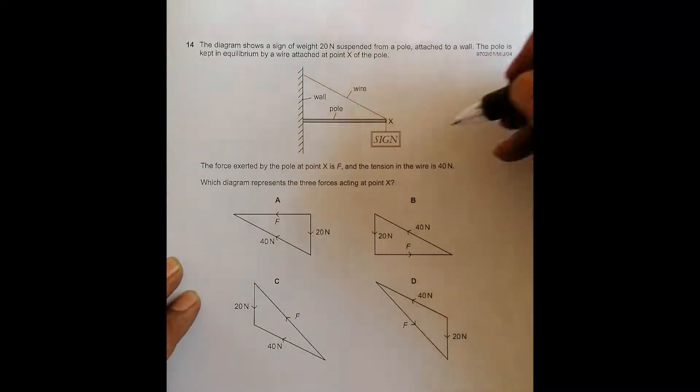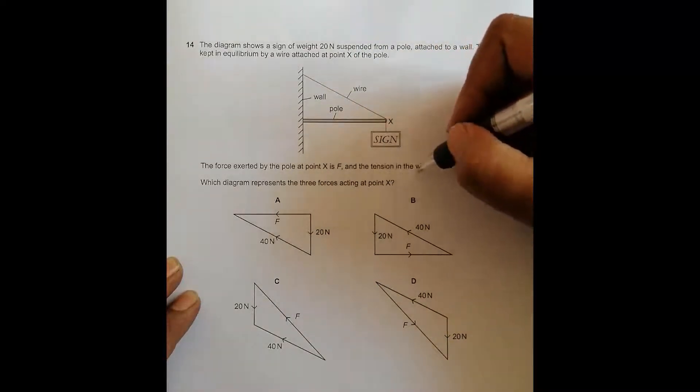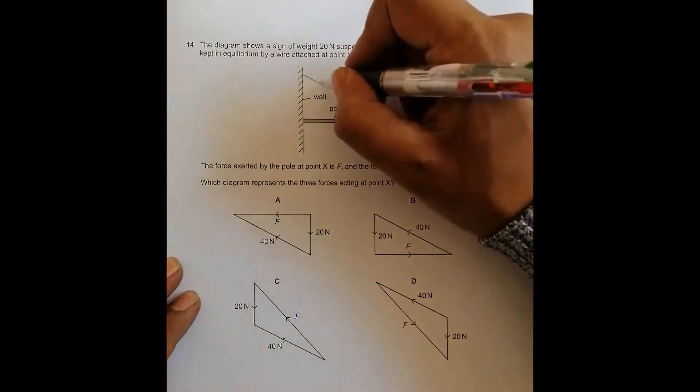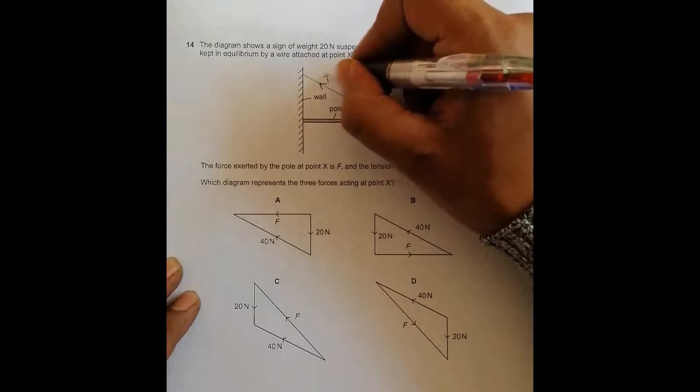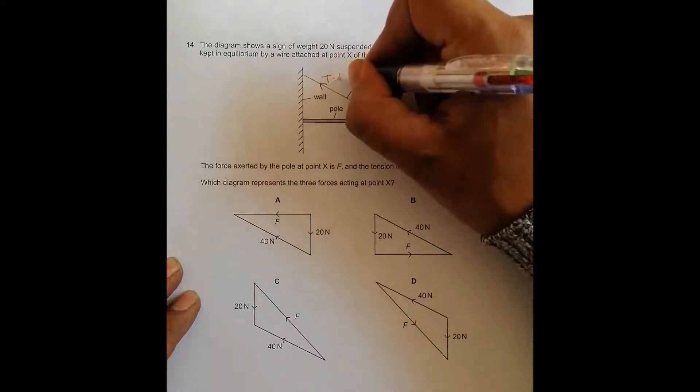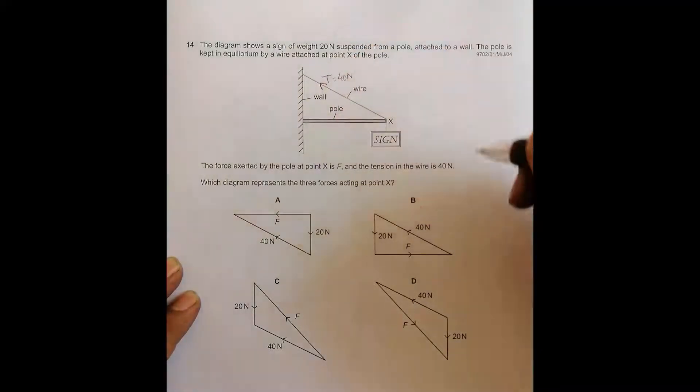So first, let's look at the tension. The tension in the wire is 40 Newton. The tension applies along the string in this direction. So this is T, and it's equal to 40 Newton.